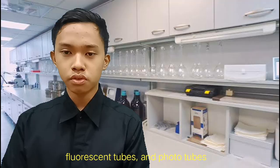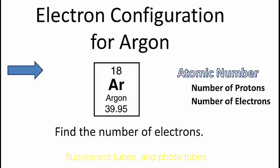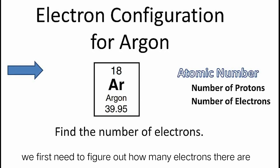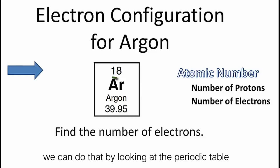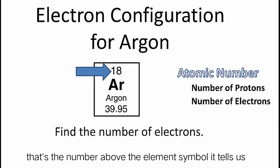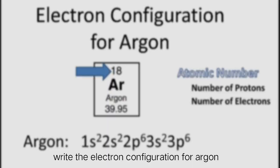To write the electron configuration for argon, we first need to figure out how many electrons there are in the argon atom. We can do that by looking at the periodic table and finding the atomic number for argon. That's the number above the element symbol. It tells us the number of protons, but it also tells us the number of electrons. And once we have the number of electrons, we can begin to write the electron configuration for argon.